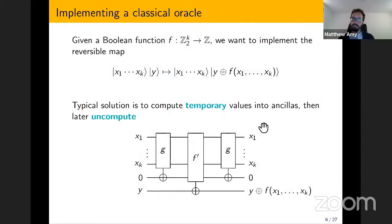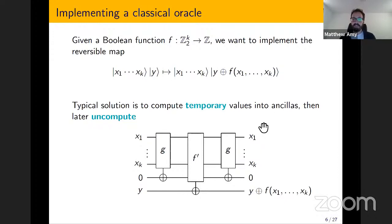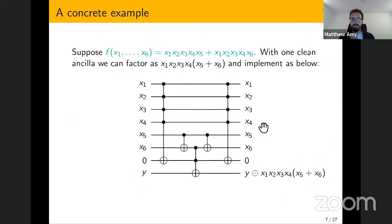The general premise is that we want to implement a classical oracle — a Boolean function with K inputs and one output. In quantum computing we obviously want to implement this as a reversible map by adding it into a target bit. We know that we can't always do this without ancillas. The typical solution is to compute temporary values into ancillas, use these temporary values to compute the function F onto the target, and then uncompute so that we don't have state garbage lying around.